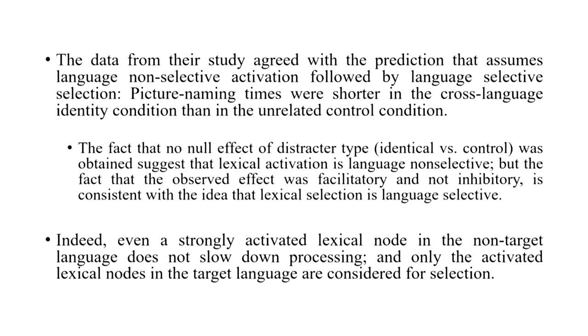To summarize: when we look at a picture and begin to name it, bilingual language production is non-selective in the sense that there is certainly activation in both the target and the non-target language. However, when moving ahead with lexical selection and phonological encoding, it is highly probable that only the words from the target language are considered for further selection. Thank you, and I will see you in the next lecture.